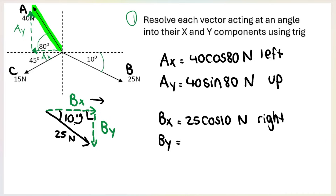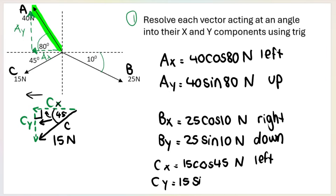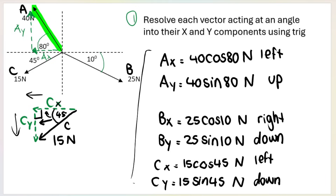B-y is opposite the 10 degrees, and opposite is sine, so B-y equals 25 sin 10 newtons, pointing down. For vector C: C-x is adjacent to the 45 degree angle, so C-x equals 15 cos 45 newtons, pointing to the left. C-y is opposite the 45 degree angle, so C-y equals 15 sin 45 newtons, pointing down. If you're still confused with how I get this, I covered it in more detail in the previous two videos — remember to check the links below.